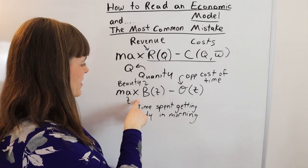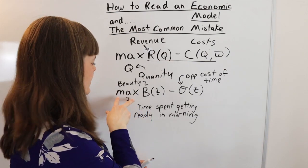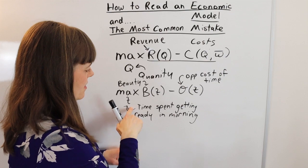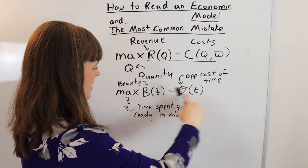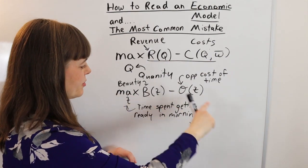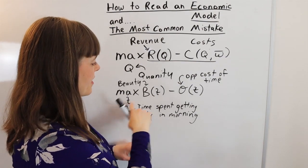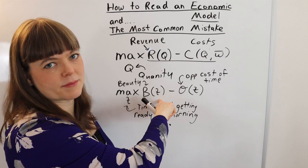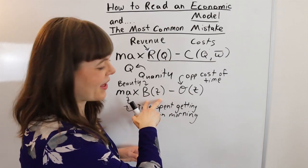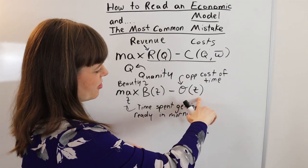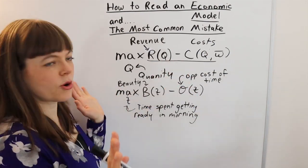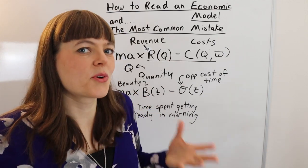So let's actually read this model down here. And oftentimes, you want to just get in the habit of saying maximizing by choosing time spent getting ready in the morning. So what are we maximizing? Well, we're maximizing beauty of ourselves minus opportunity cost. So maximizing beauty minus opportunity cost by choosing time spent getting ready in the morning. And we see that beauty is a function of time spent getting ready. And that makes a lot of sense. If you spend more time on your hair, you're going to be more beautiful that day. And then opportunity cost depends on the time spent getting ready in the morning because, of course, you could be doing other things. So that makes total sense. And we've sort of oriented toward the model.